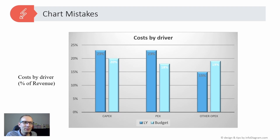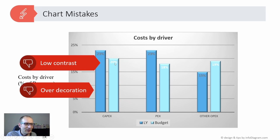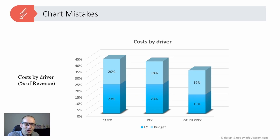Also, people are still sometimes using a 3D style for charts, which is not a good practice because it doesn't add clarity. This is over-decoration — using bevel styles, shines, and effects. In this case, we also have low contrast with the numbers: gray on blue or white on light blue are not the best combinations and are harder to read. Try to avoid 3D charts — they may look nicer but they don't communicate data clearly.